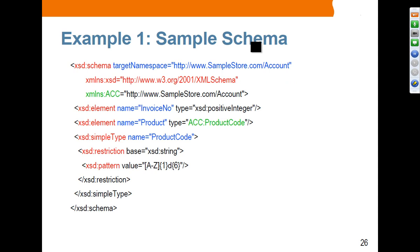Here is a sample schema. A schema is where you are defining your own elements. In this case, we have defined an XML schema, and this is the target namespace. You are defining these elements: invoice number, product, and product code. These are the elements you are defining in your XML schema so that somebody else can use them.